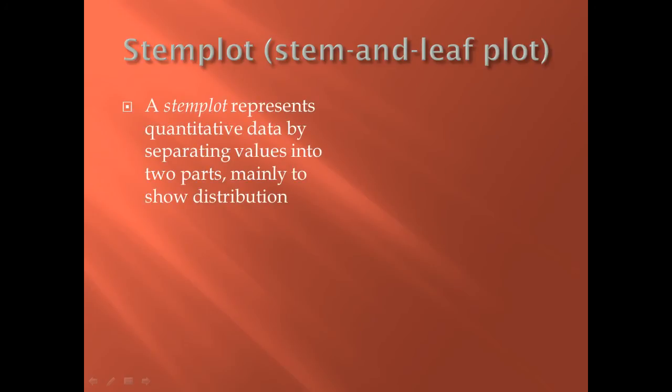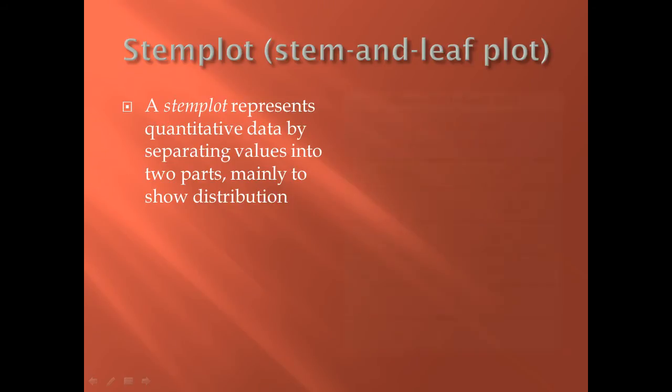Stem and leaf plot is something familiar to you from integrated algebra. It represents quantitative data by separating two values into two parts, and typically this is to show distribution. As you can see on the right, the stem and leaf plot of ages of people at a family reunion shows the distribution of ages and the fact that most people are under the age of 40.